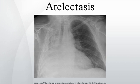Atelectasis may be an acute or chronic condition. In acute atelectasis, the lung has recently collapsed and is primarily notable only for airlessness. In chronic atelectasis, the affected area is often characterized by a complex mixture of airlessness, infection, widening of the bronchi, destruction, and scarring.